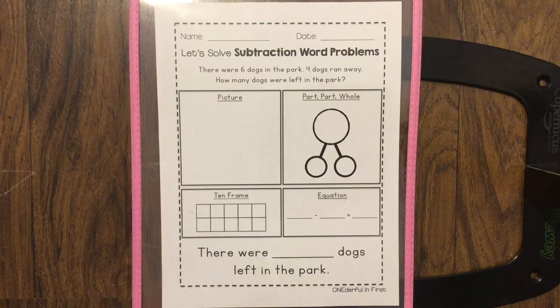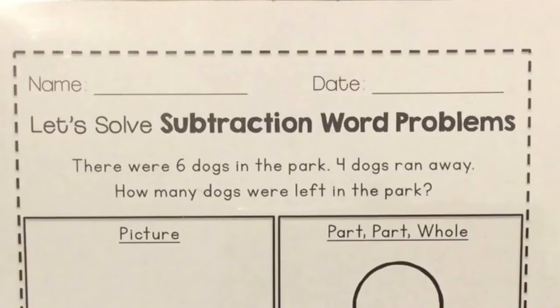So the first thing I do when I have a word problem is I read it. There were six dogs in the park. Four dogs ran away. How many dogs were left in the park?